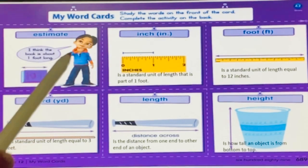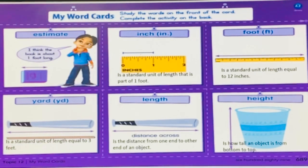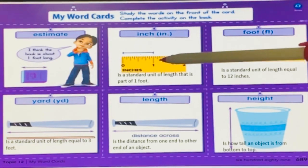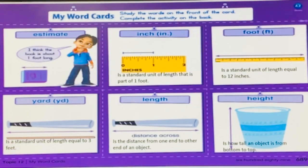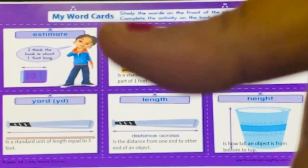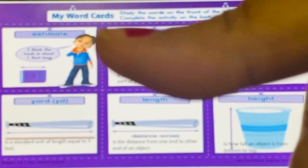Then the next one is inch. Now what is an inch? Inch is a standard unit of length that is part of one foot. If you have a ruler at your home, pick up the ruler and see. You will see different numbers and lines on the ruler. So this point 0 to 1, this distance is called one inch. And this distance is approximately equal to your thumb. This is one inch.